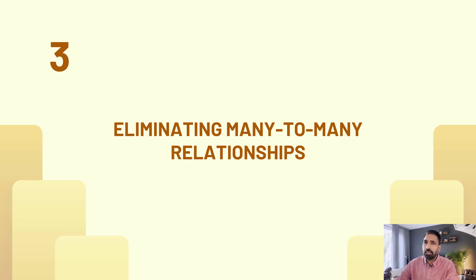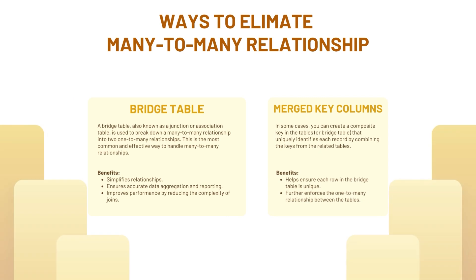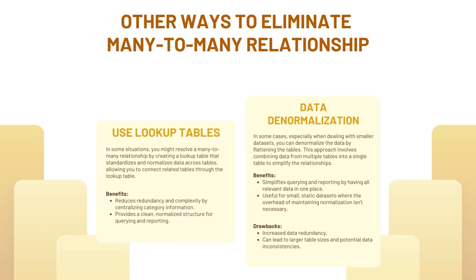There are two ways to eliminate a many-to-many relationship. First, create a bridge table that holds keys from both tables as a unique composite key — I explained this in my previous video. Second, create a bridge key column by merging two columns into one using a separator like a hyphen, then create the same column in the other table and join them through a relationship. My recommendation is to create a bridge table, or merge key columns to create a new column for the relationship.